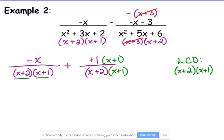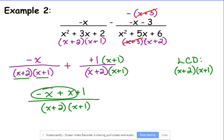So they have the same denominator here. I'm just going to combine their numerators. We've got negative x plus, distributing a 1 doesn't do anything, so that's just x plus 1. We need to combine like terms in the numerator. Negative x plus x cancels. So we've got 1 over x plus 2 times x plus 1.